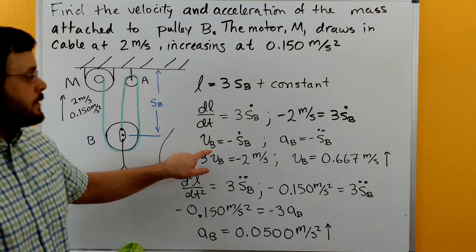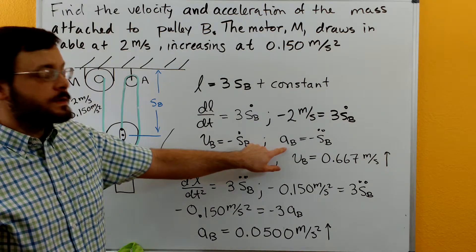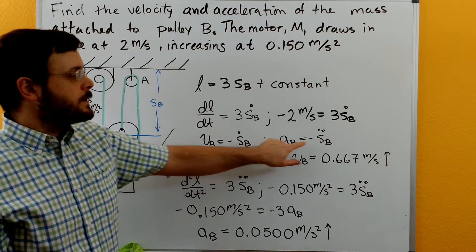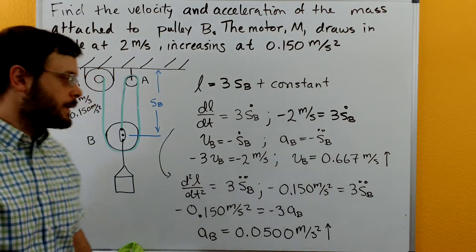Taking a time derivative of this, we get that the acceleration of B must also be equal to the negative of SB double dot.